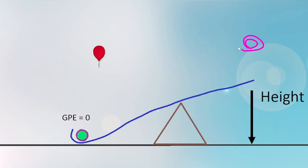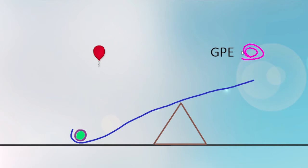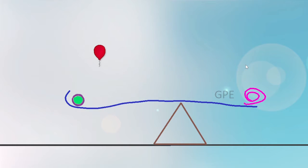The object has lots of height, so it has lots of GPE. Energy can change forms. The object lost GPE as it fell, but it gained kinetic energy as it sped up.